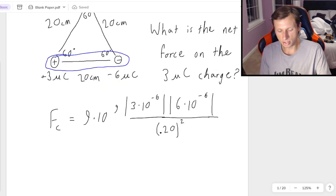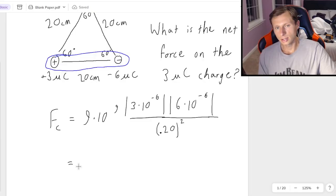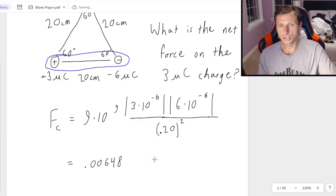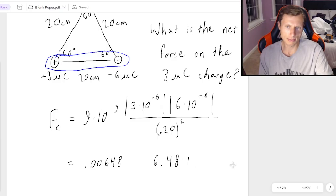Since I have a calculator, we can easily calculate what this is going to be, as long as we're careful with the scientific notation. I'm going to get 0.00648. I could also write this as 6.48 times 10 to the minus third, but I'll keep it as the decimal for now.